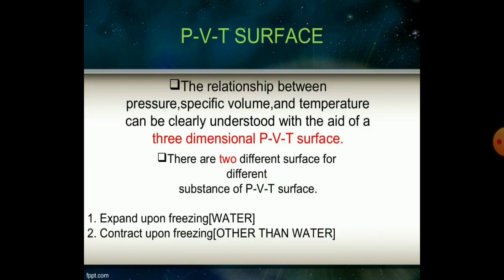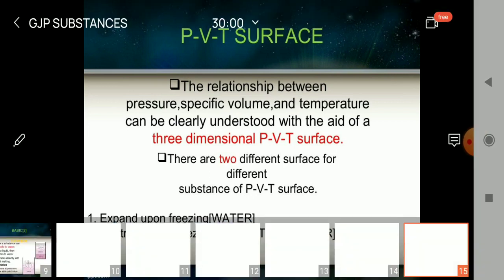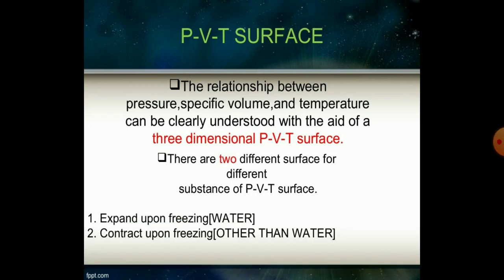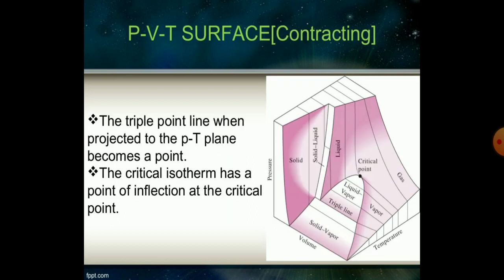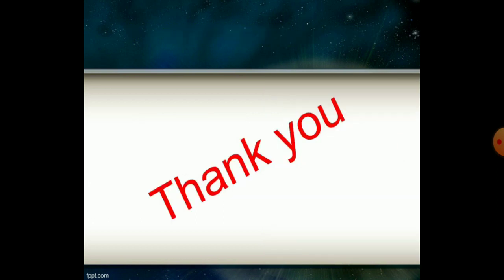The relationship between pressure, specific volume, and temperature forms a three-dimensional PVT surface. There are two different PVT surfaces for different substances — one for water, which expands upon freezing, and one for other substances, which contract upon freezing. Any point on the PVT surface represents an equilibrium state. The triple point line, when projected to the PT plane, becomes a point. The critical isotherm has a point of inflection at the critical point.